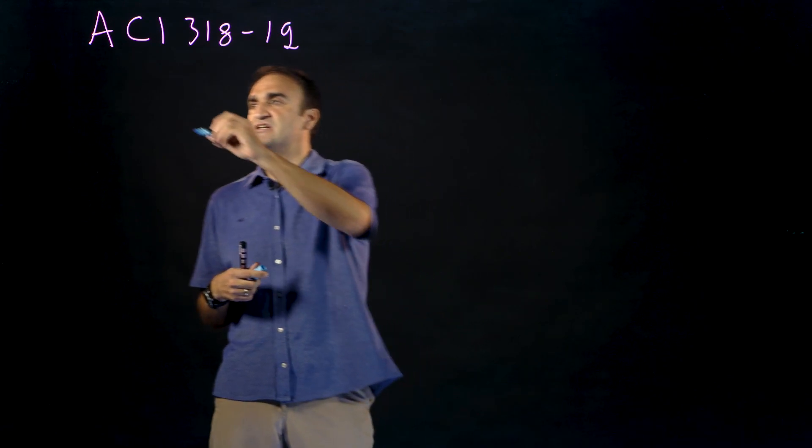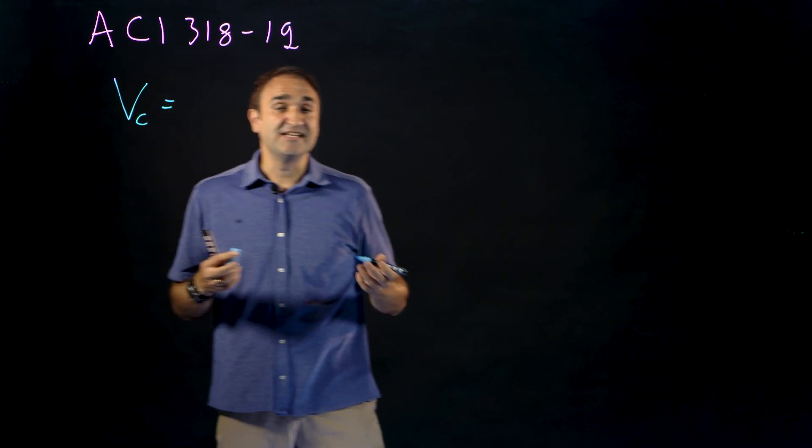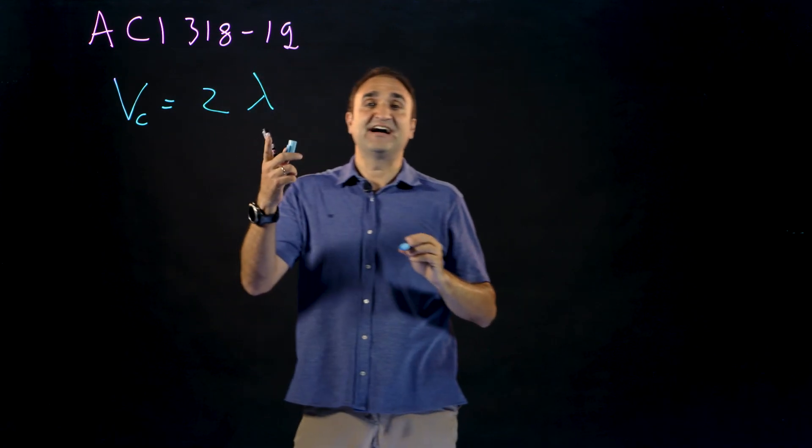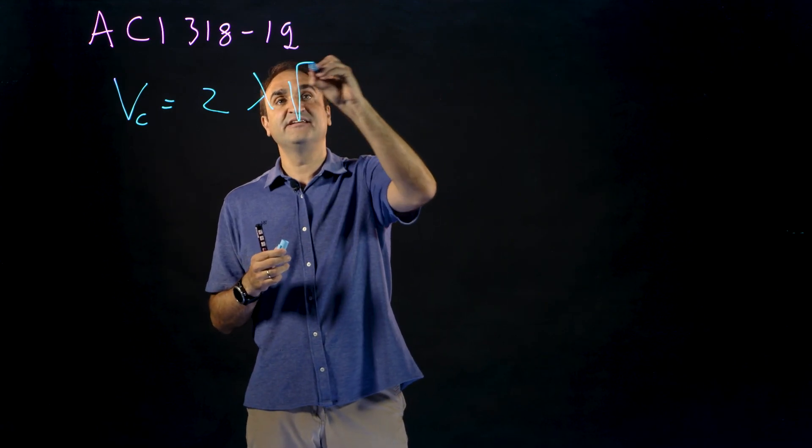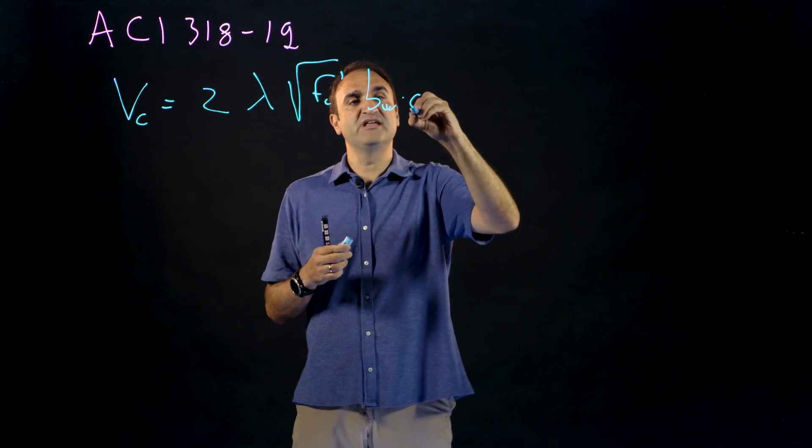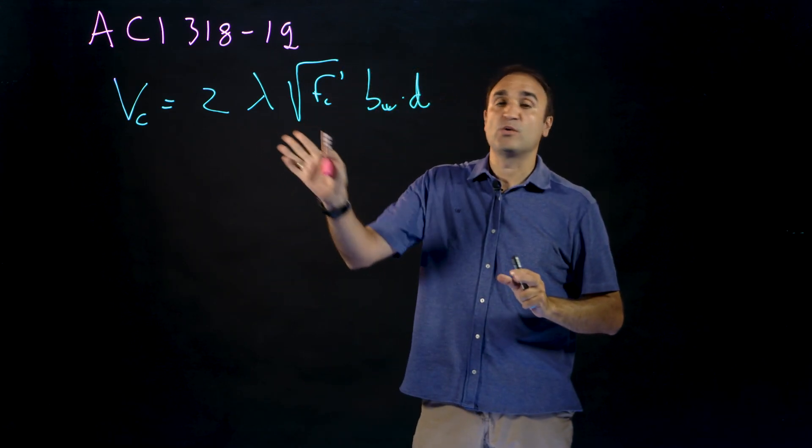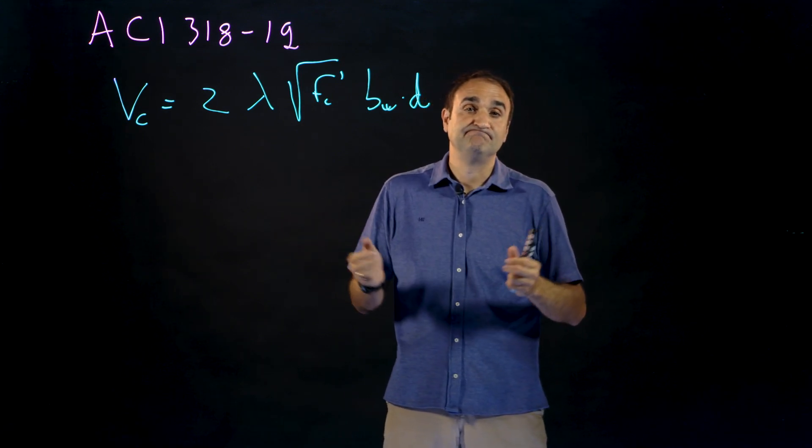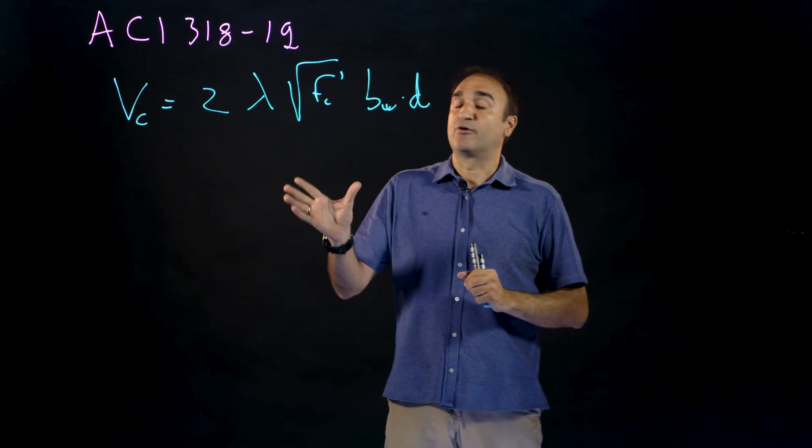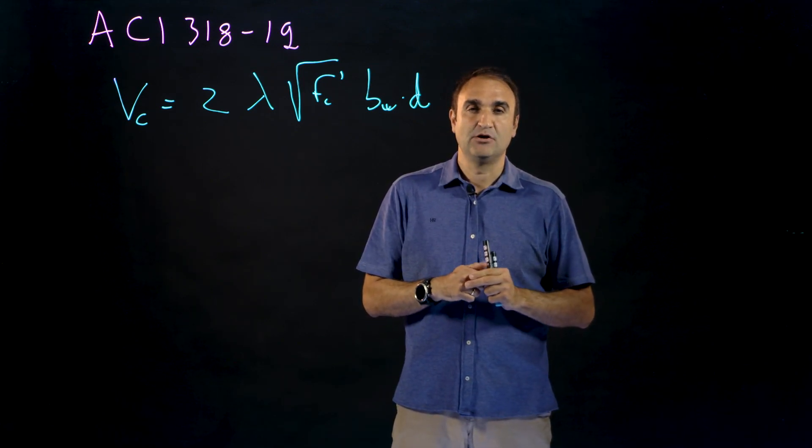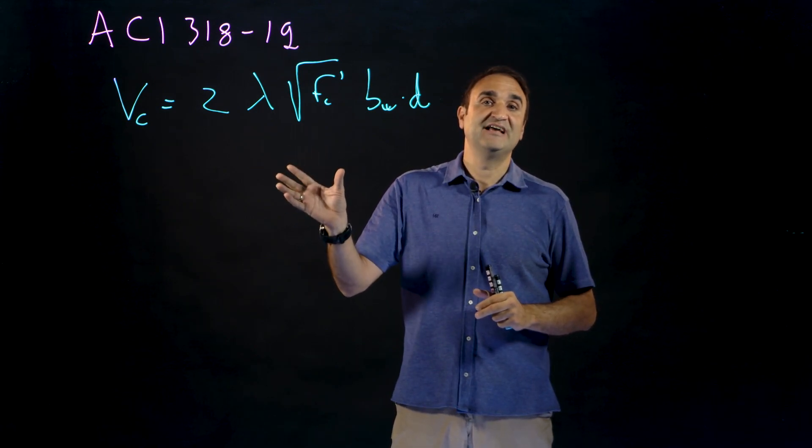This is a milestone for researchers working on shear strength because since the 60s the concrete contribution was something like two times a factor for lightweight aggregate concrete, the root of fc prime times the web width and the effective depth. We have had this equation for more than 50 years, but these equations had some safety concerns for slabs with a low amount of longitudinal reinforcement and for large beams this equation was clearly unsafe.